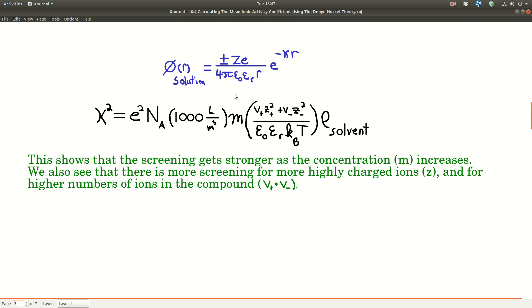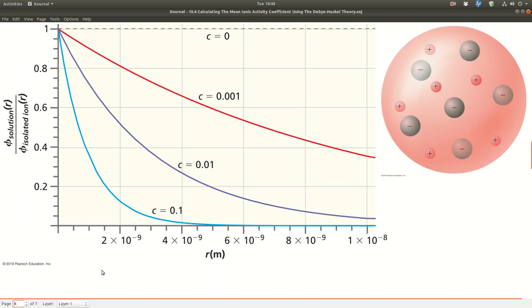What this is saying is we're talking about screening. The charge on that central ion, its effect, decreases with distance. That's this exponential term. As the molality or concentration gets larger, this term gets smaller because it's e to the minus kappa r. As the concentration increases, the electrostatic potential decreases. Also, as the charges get bigger, the electrostatic potential decreases faster. And also for higher numbers of ions.